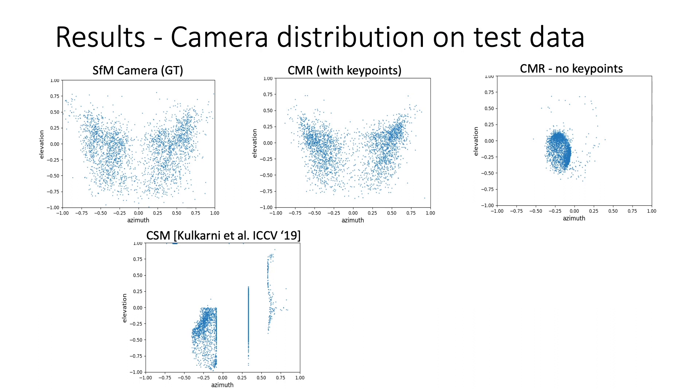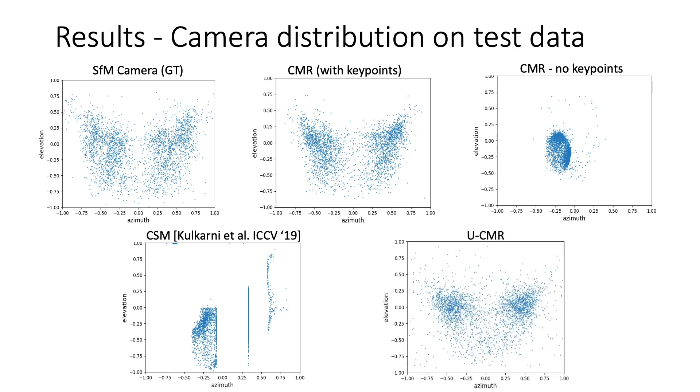Our approach, UCMR, on the other hand, learns to predict an almost uniform camera pose distribution that's similar to the ground truth. UCMR camera pose predictions do not collapse to a few modes and are qualitatively better distributions than CSM and CMR without key points.